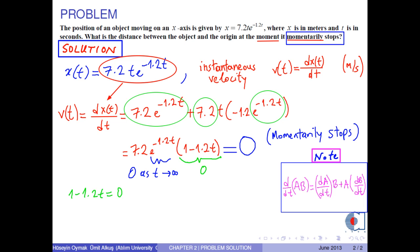Next, we solve 1 minus 1.2 t equals 0. Consequently, we obtain t equals 5 over 6 seconds, or approximately 0.833 seconds.